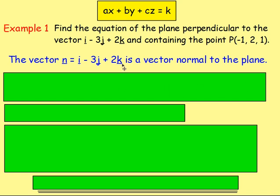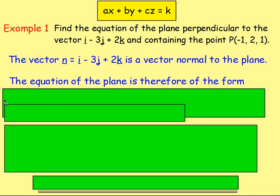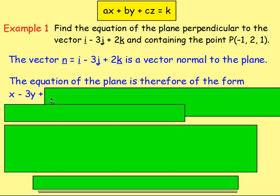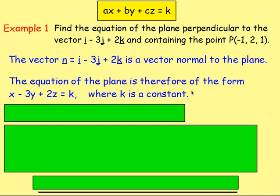Because that's the normal vector, we take the coefficients of i, j, and k — that's 1, negative 3, and 2 — and put them into the equation of the plane, replacing a, b, and c. So the equation of the plane will be of the form 1x minus 3y plus 2z equals k, where k is a constant. You take the coefficients of i, j, and k and put them in front of x, y, and z.